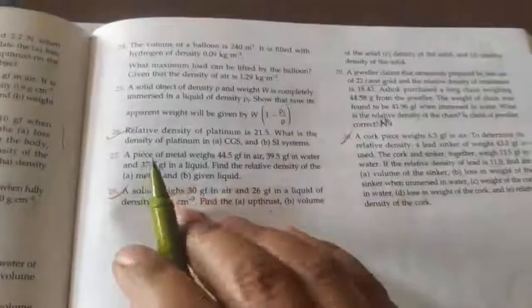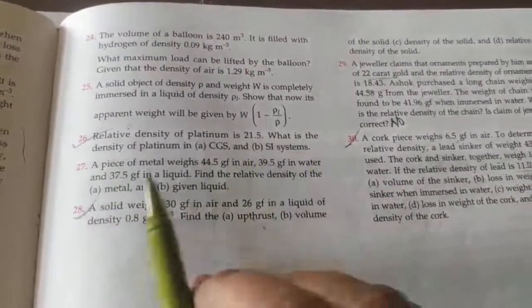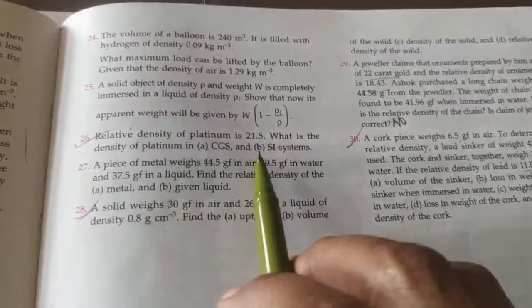Question number 26, relative density of platinum is 21.5, what is the density of platinum in CGS and SI system?